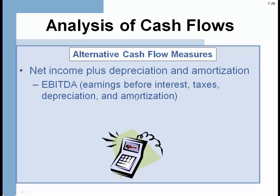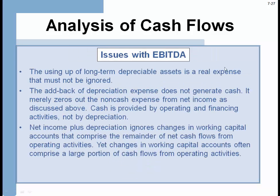There are some alternative measures of cash flows. One is EBITDA — earnings before interest, taxes, depreciation and amortization. It's a quick and dirty way to understand if a business is generating cash or not. Some issues: long-term depreciable assets are a real expense that can't be ignored, even though they're non-cash. Depreciation expense does not generate cash. And net income adjusted for depreciation ignores changes in working capital — you miss whether the company is tying money up in accounts receivable or paying down accounts payable. But if you're doing a quick evaluation, EBITDA gives you a pretty good measure of where the business stands.